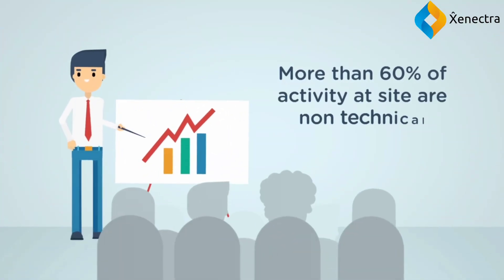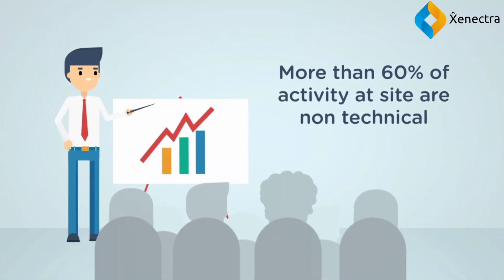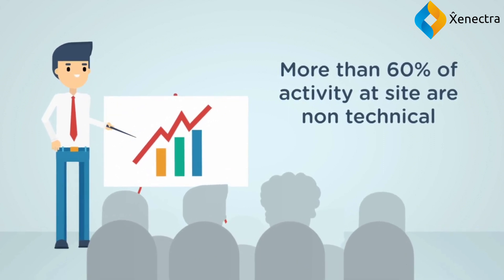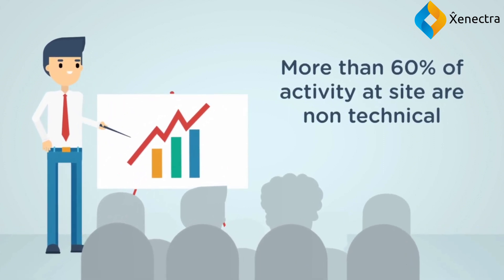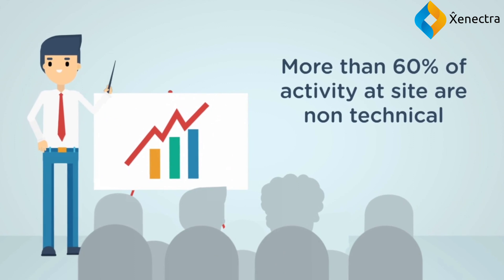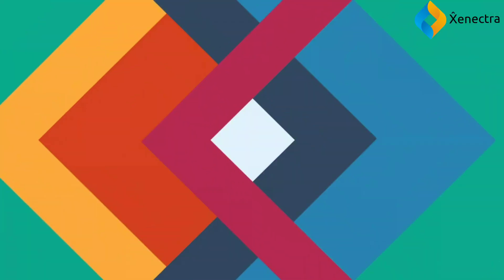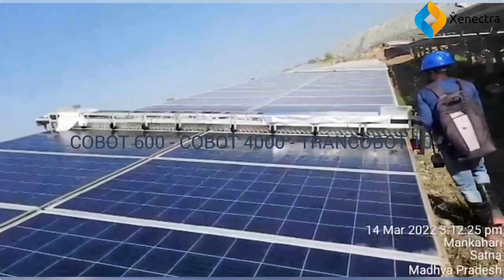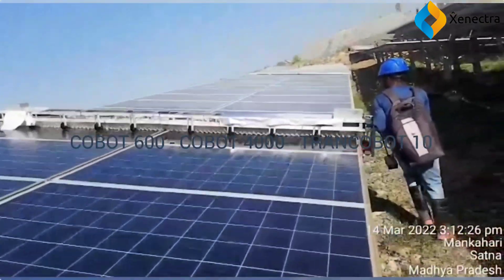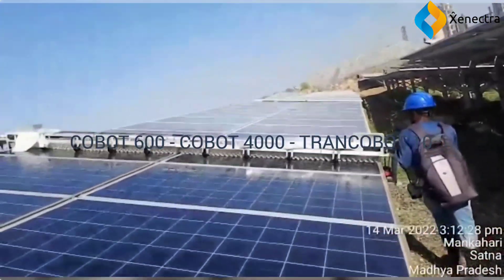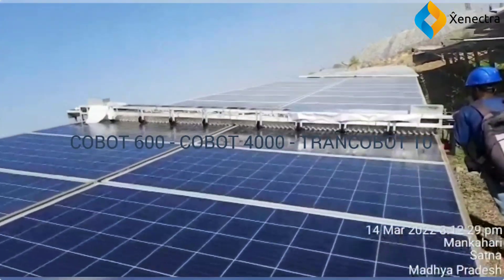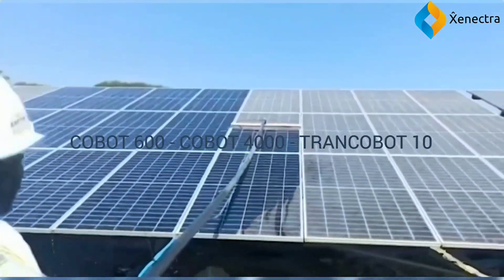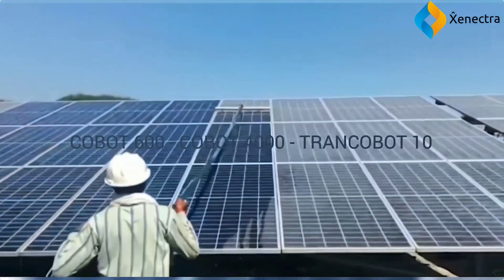More than 60 percent of activity at solar PV plants is related to module cleaning and vegetation management. This calls for better resource management to deliver better services. By deploying robotic solutions to handle these activities at site, ICE delivers efficient and verifiable service to its customers.